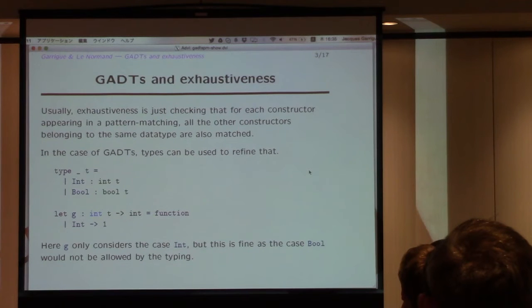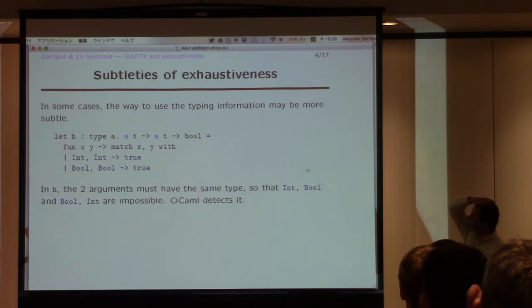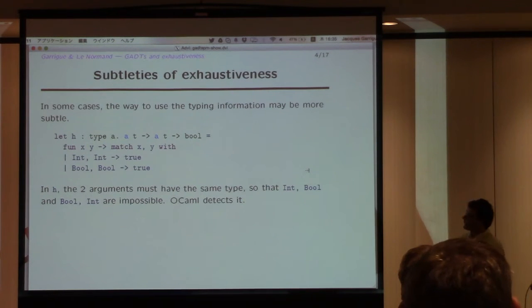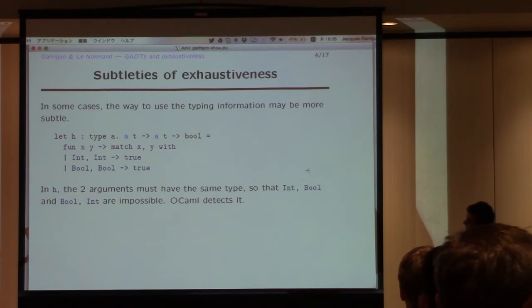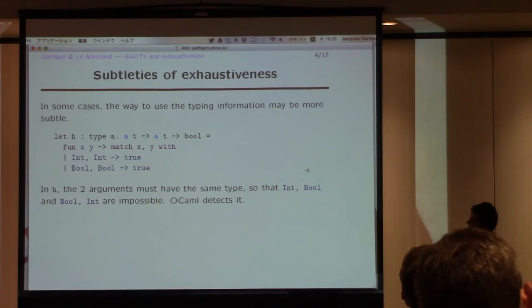So it's quite essential to have that with GADTs. And this process can be rather subtle. So if you think of other cases, here this case is, suppose you have a function that takes two parameters, and we force them to have the same type index. So now when you're pattern matching on the two arguments, you actually know that they should be either both int or both bool t.